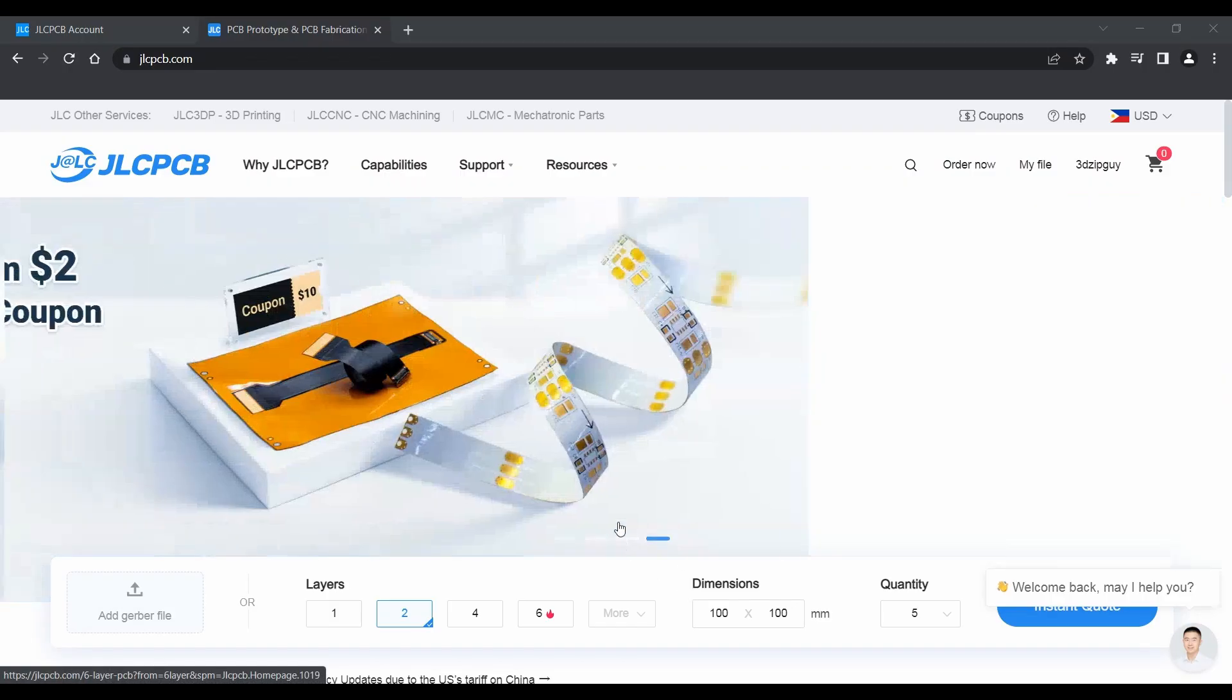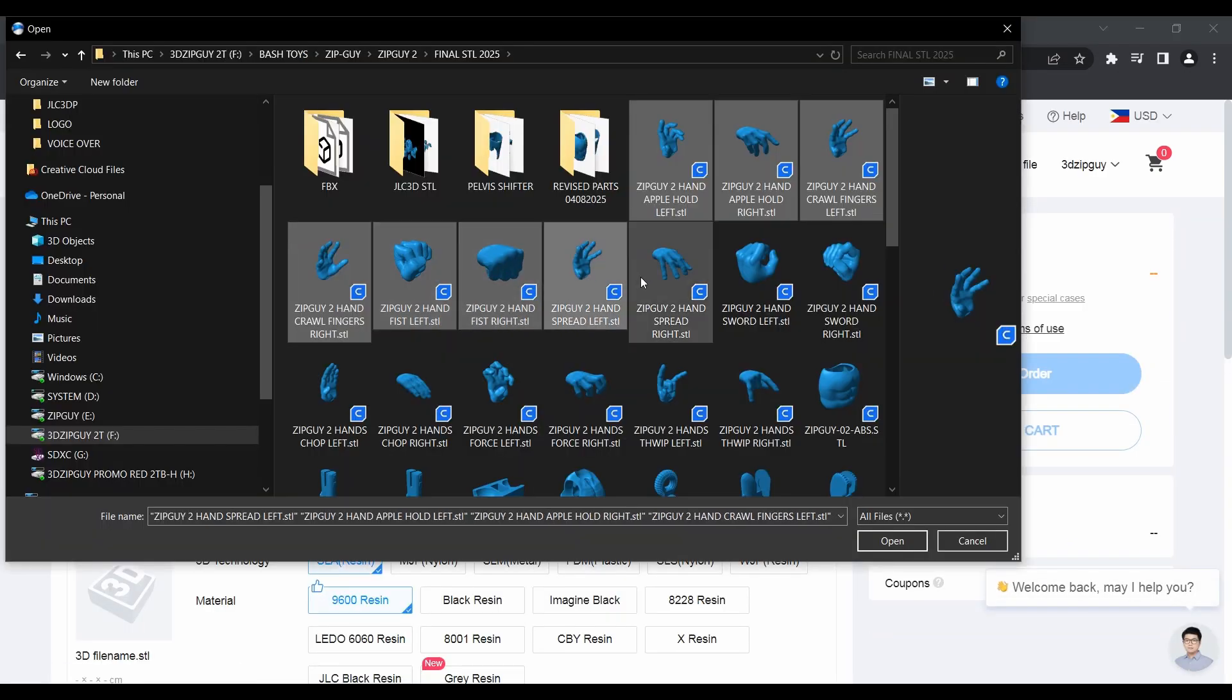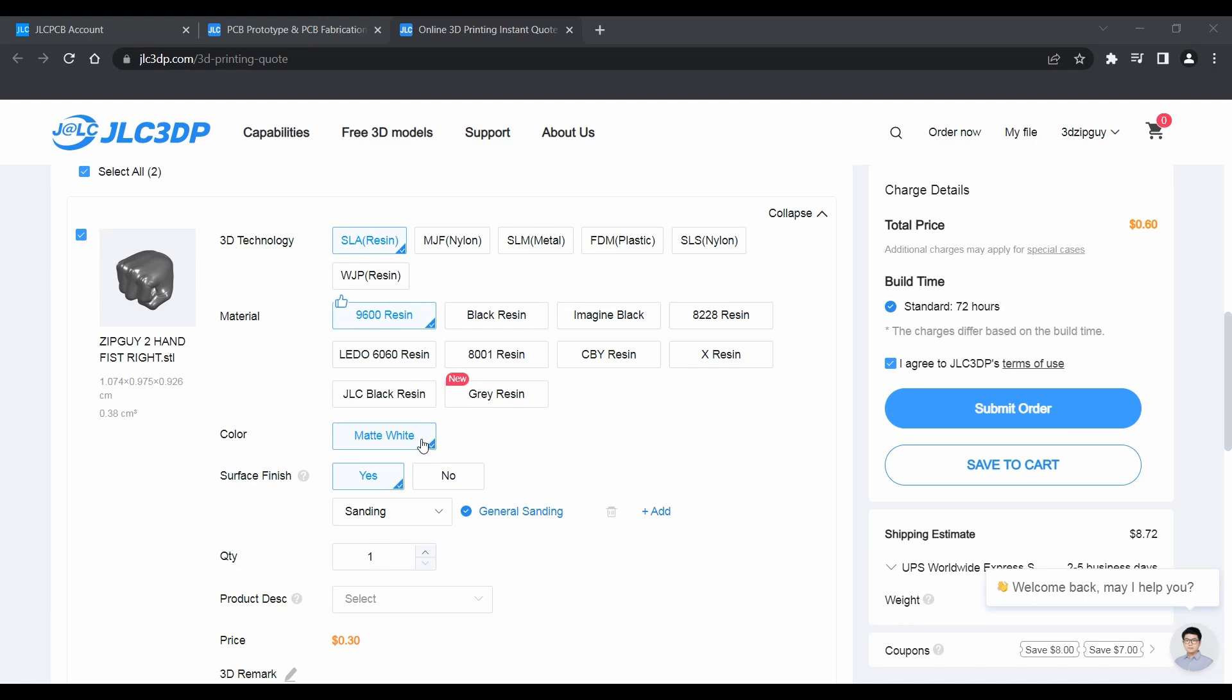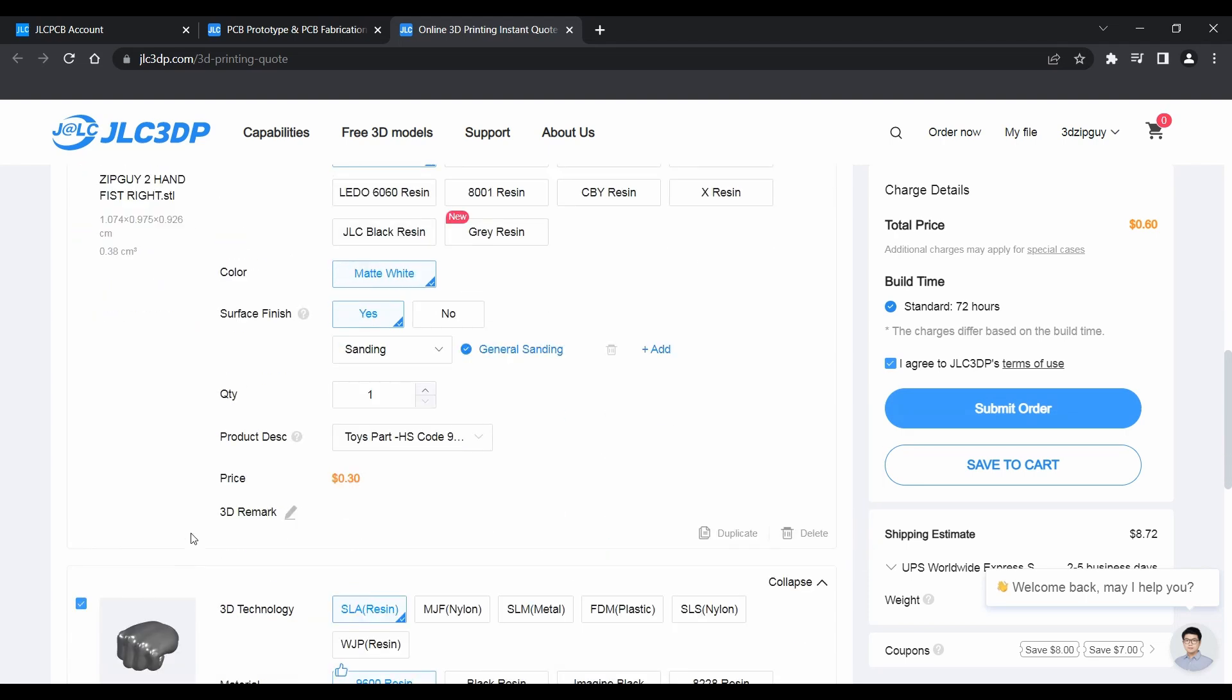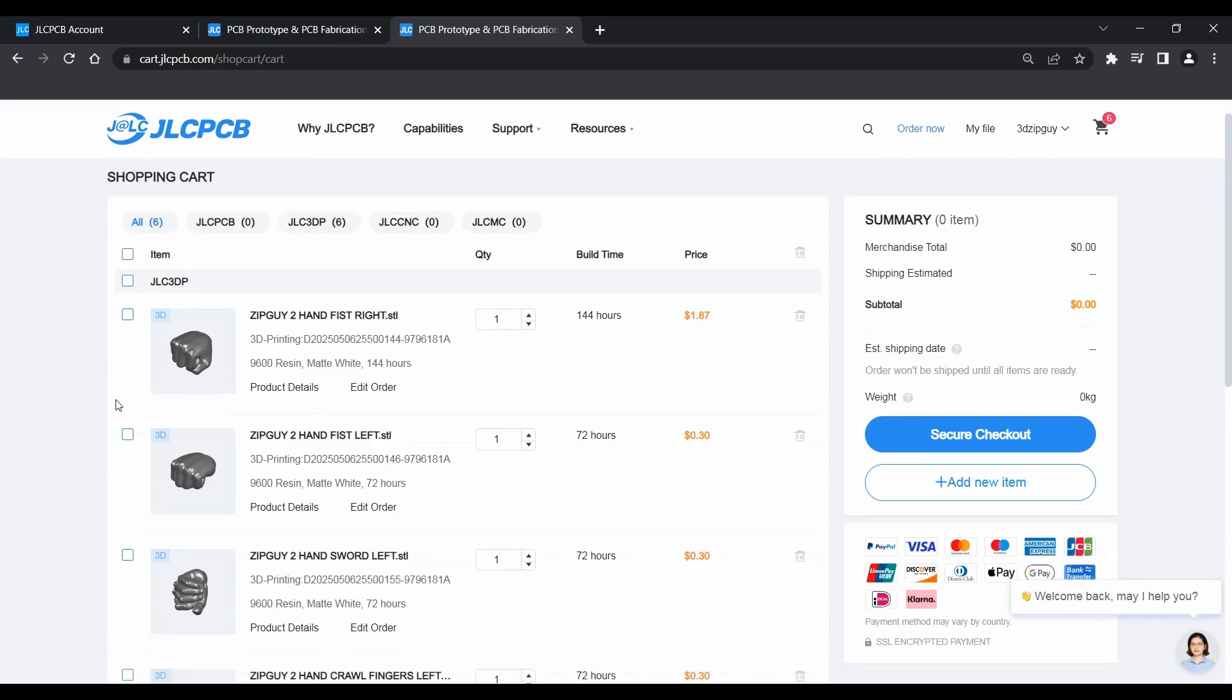Let me show you how it works. Go to JLC3DP.com. Upload your STL file. Choose your material—resin, plastic, metal, etc. Pick your finish. Get an instant quote. That's it. They handle the printing, packing, and shipping.